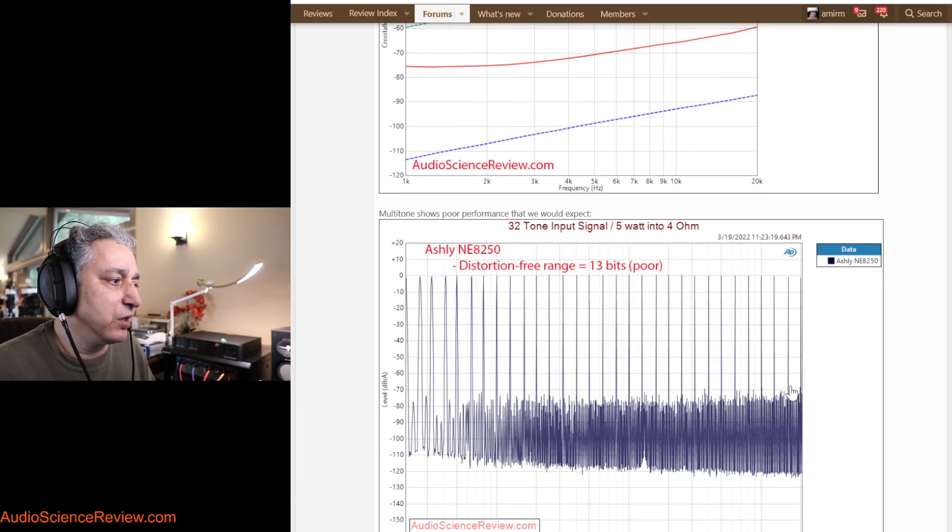Multitone shows the problem, again, with distortion. And now if we measure that in bits equivalent, we get only 13 bits. Everything below 13 bits gets hammered and lost in this intermodulation jungle.